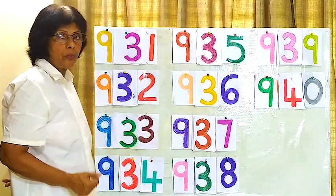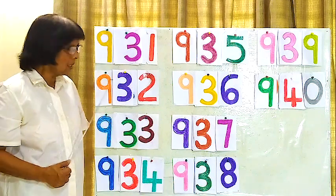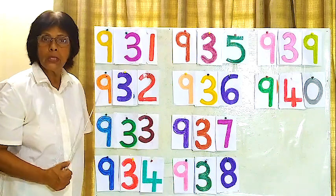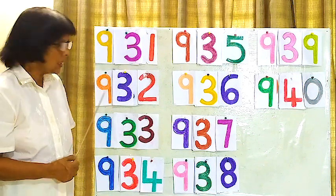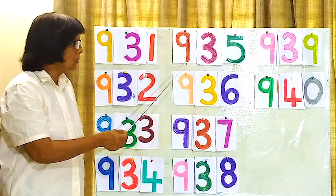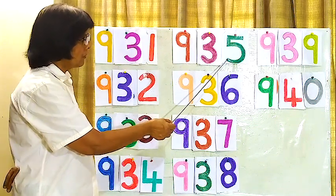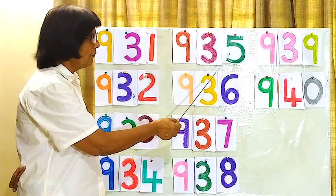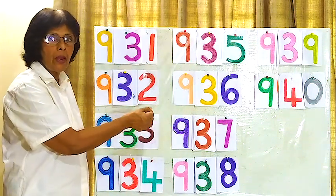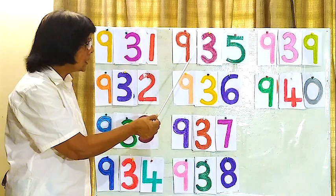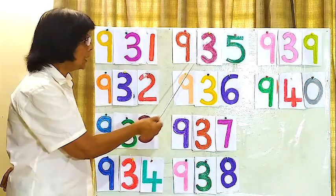Now we will read like this here. What is this number? 932. How do you read? 932, 932. What about this one? 935, 935, 935.